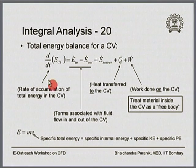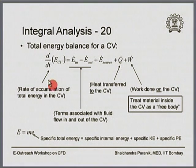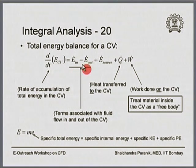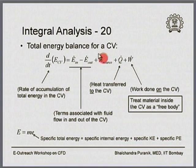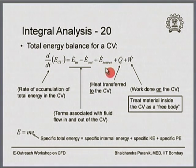The energy balance is essentially the same sort of balance statement we wrote in general form and then specialized for mass balance and linear momentum balance. Here, the rate of accumulation of total energy in the control volume is on the left-hand side. E_dot_in and E_dot_out are terms containing total energies associated with the fluid flow coming in and going out of the control volume. In addition to these there is a source term, E_dot_source, which can typically be some sort of chemical reaction happening within the control volume.